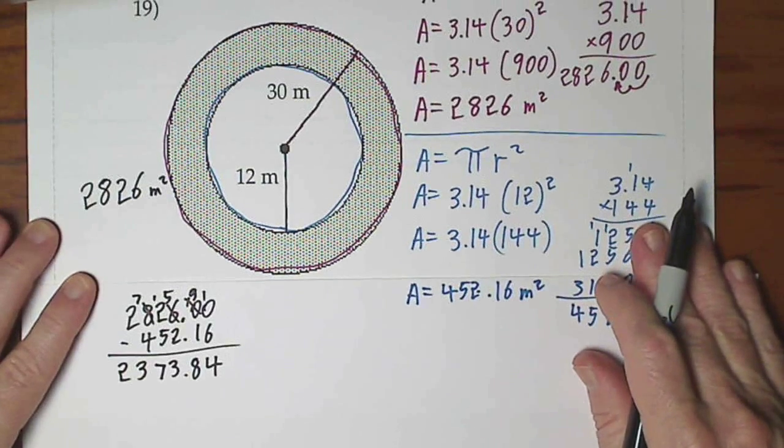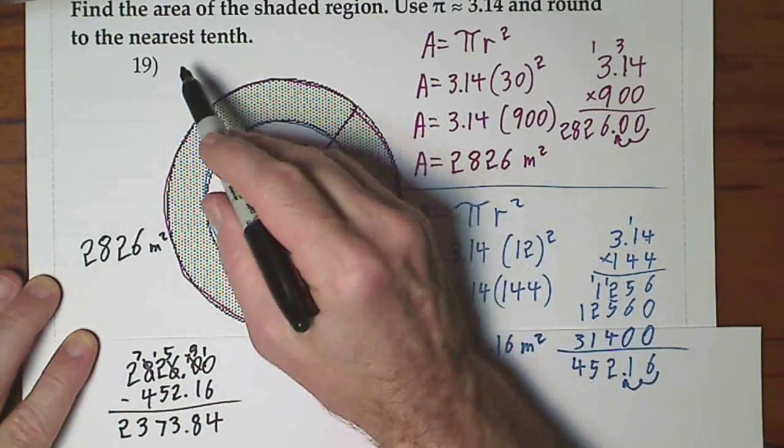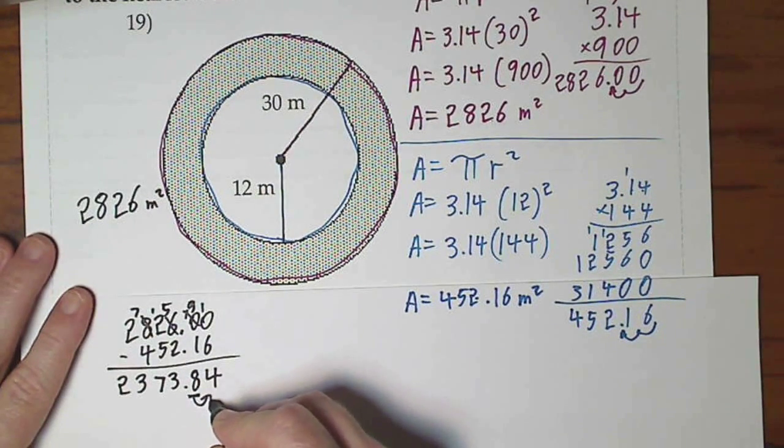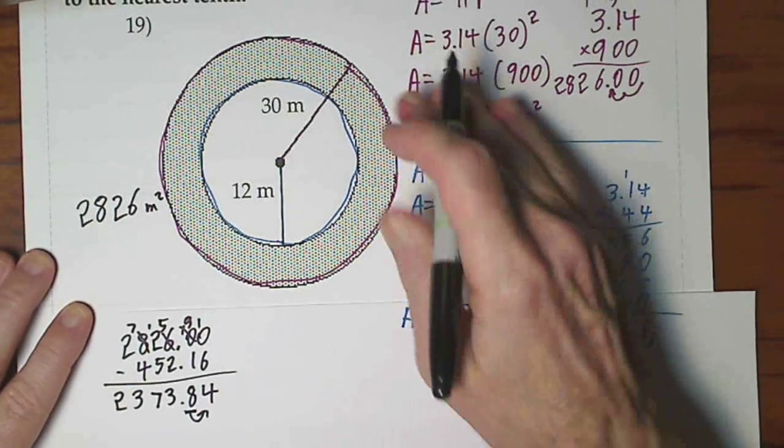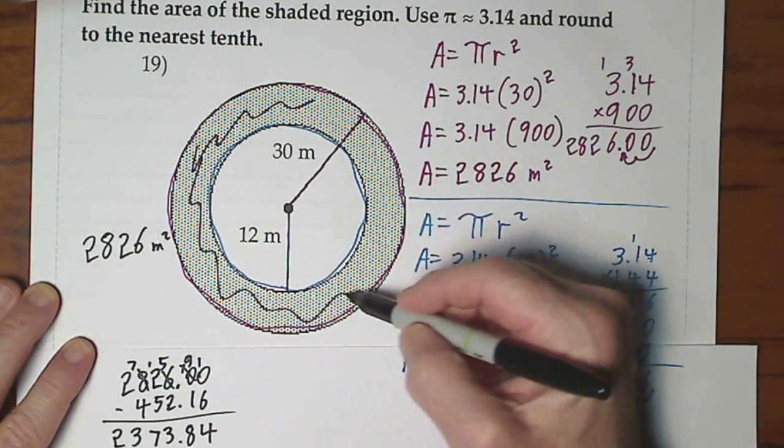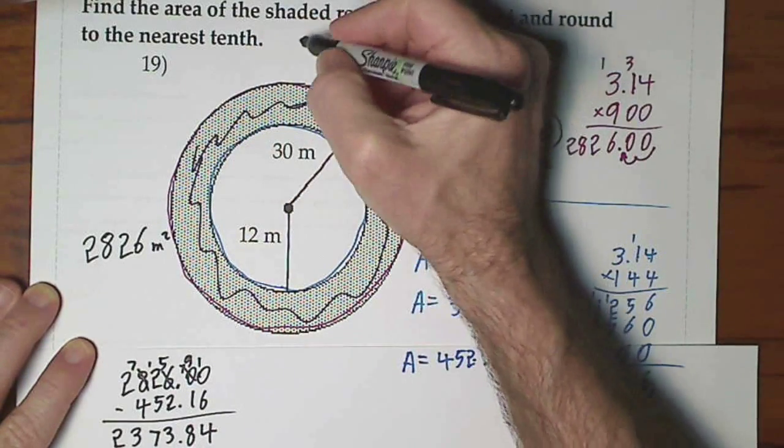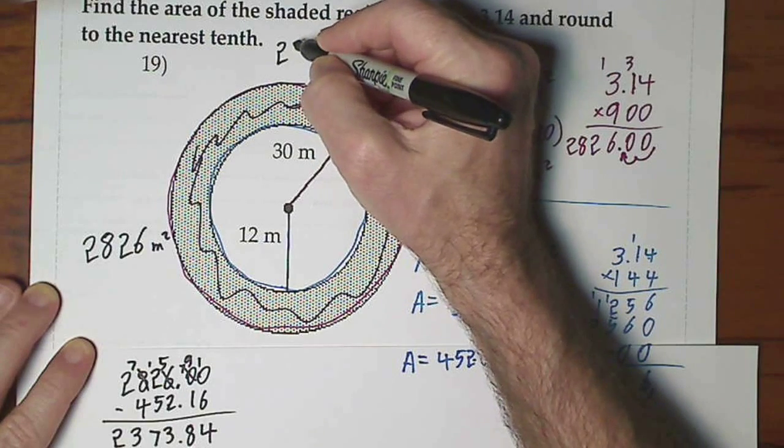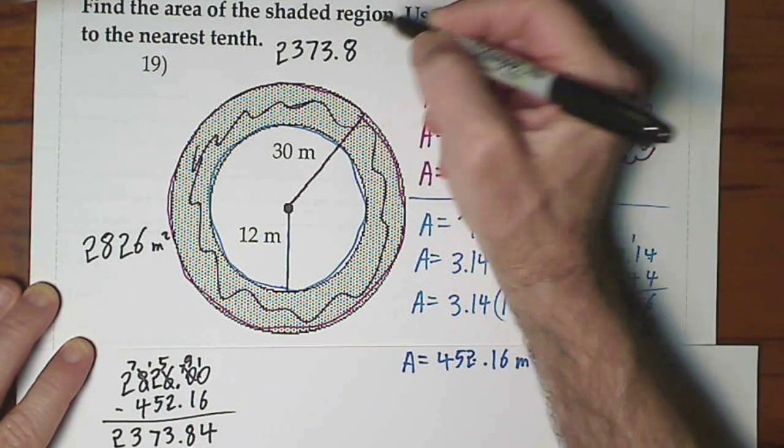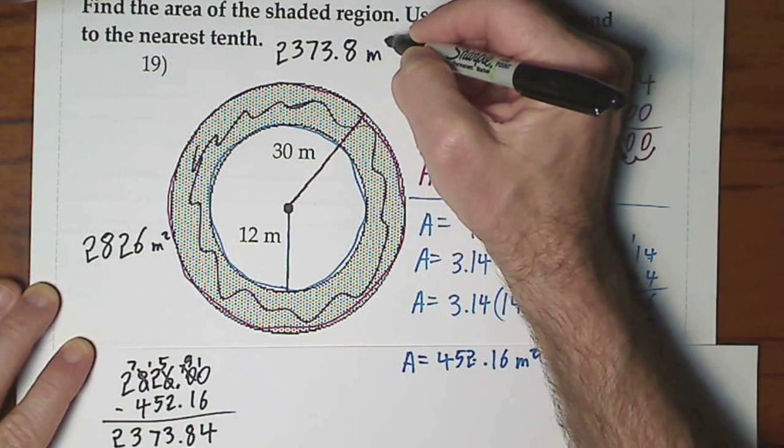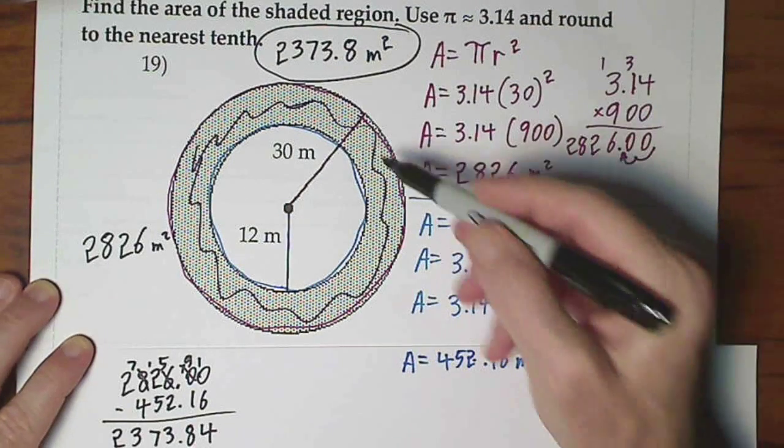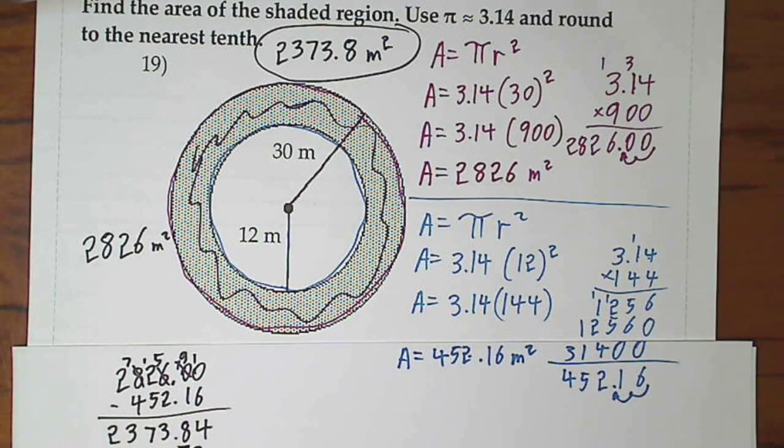And they did say that we could round to the nearest tenth. So you stand at your eight, look over at the next digit, you round down. So the area of the shaded region, this shaded region all the way around, is 2,373.8 square meters. It's the area of the shaded region.